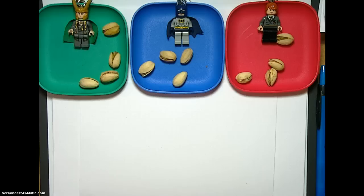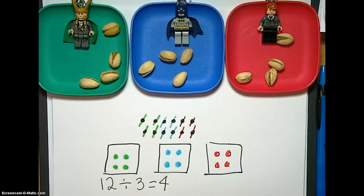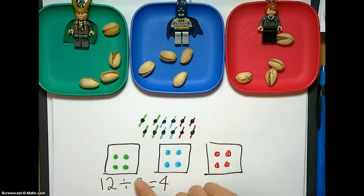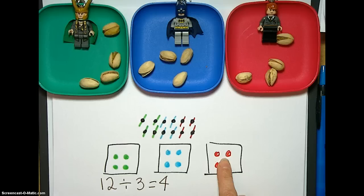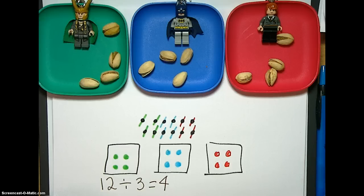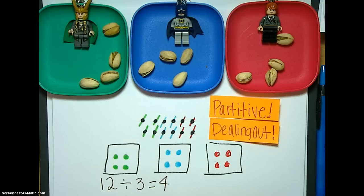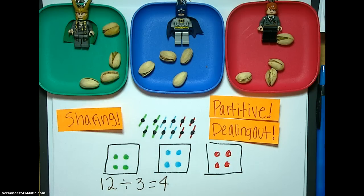Now, on a test we won't have Loki, Batman, and Ronald Weasley to help us, so how are we supposed to show this? Well, here's a lovely picture drawn by Ariel, because she writes neater than I do. You have your original 12 pistachios, and she deals them out to three different plates, showing that there are four pistachios on each plate. The formal name of this kind of division is partitive — also called dealing out, and in class we'll just refer to it as sharing. All three terms mean the same thing: if you have 12 objects divided into three groups, how many are in each group?